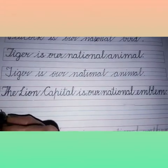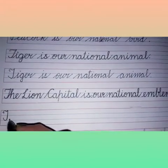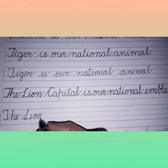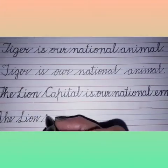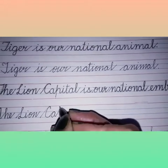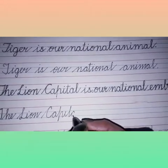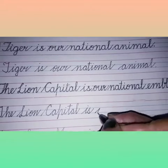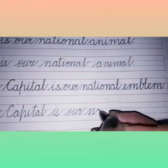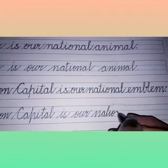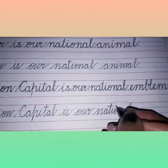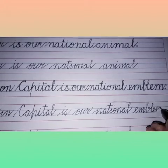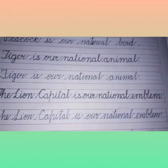So we will repeat the same sentence in the next row: T-H-E, The, lion, C-A-P-I-T-A-L, Capital, is our national emblem. The lion capital is our national emblem. Read the last sentence of this page.